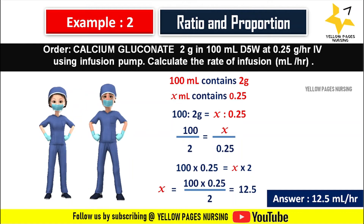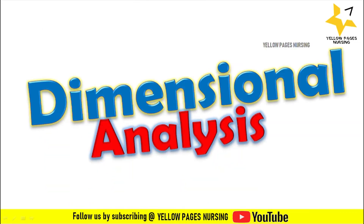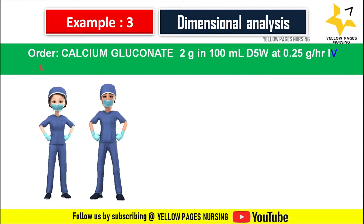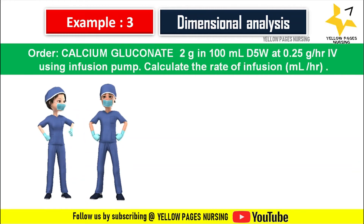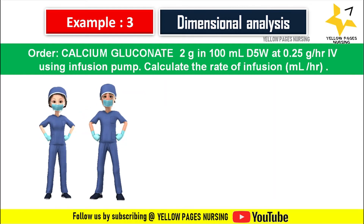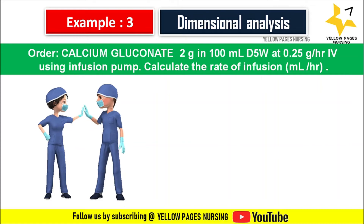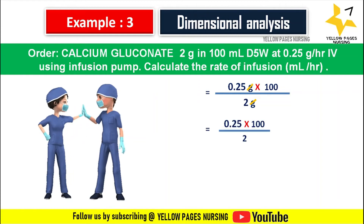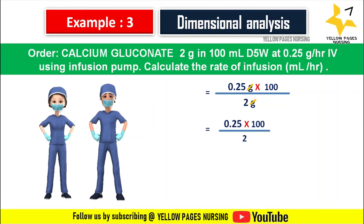Next, let's discuss the same example using dimensional analysis. Doctor's order: calcium gluconate 2 gram in 100 ml D5 water at 0.25 gram per hour IV using infusion pump. Calculate the rate of infusion, that is ml per hour. This is almost similar to the formula method. Applying dimensional analysis: 0.25 gram multiplied by 100, divided by 2 gram — the gram units cancel.